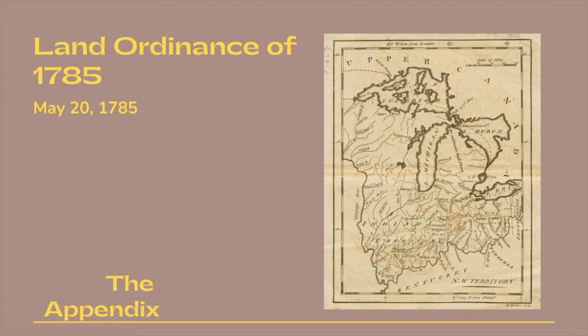The Geographer shall personally attend to the running of the first east and west line, and shall take the latitude of the extremes of the first north and south line, and of the mouths of the principal rivers. The lines shall be measured with a chain, shall be plainly marked by chaps on the trees, and exactly described on a plat, whereon shall be noted by the surveyor, at their proper distances, all mines, salt springs, salt licks, and mill seats, that shall come to his knowledge, and all watercourses, mountains, and other remarkable and permanent things, over and near which such lines shall pass.